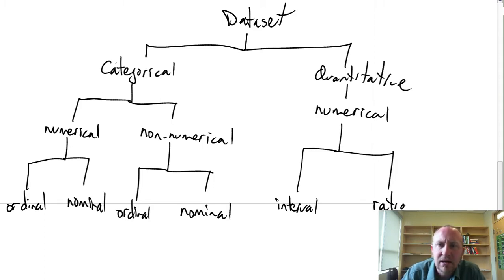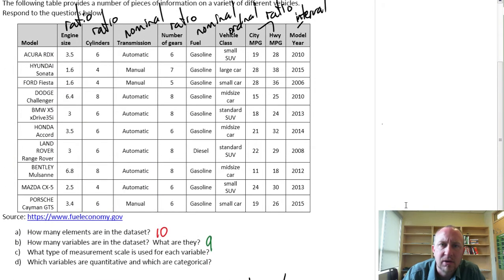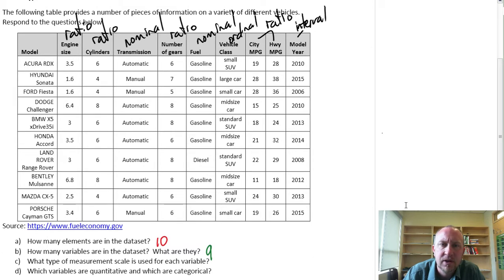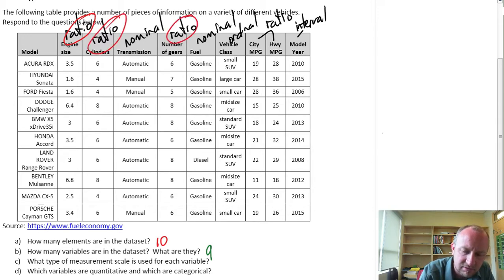So if we come back up to our data set, where we've already identified everything based on its measurement scale. Well here I have, here's a ratio, this must be quantitative. This ratio is quantitative. All of these ratio variables must be quantitative. And I also know that interval variables are quantitative.